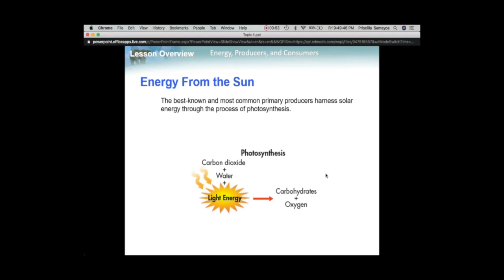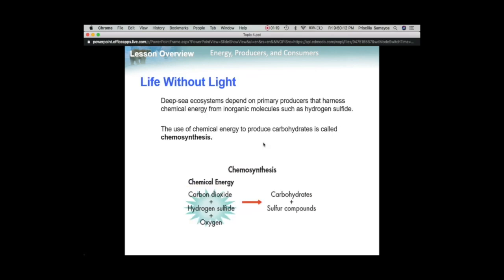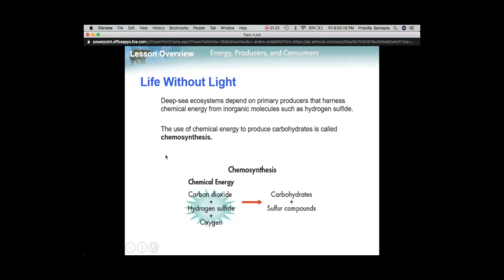When it comes to energy, whereas animals get their energy from eating plants or each other, the producers actually get their energy from the sun for the most part. They do that through photosynthesis, which we will talk about in depth later on. You're actually looking not just for sun energy; you also have chemosynthesis,